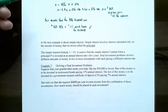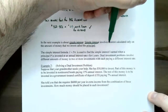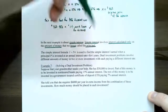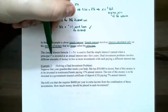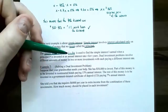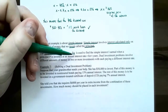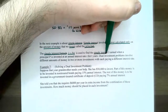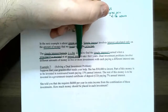The next example requires knowledge of simple interest. Simple interest is where interest is calculated only on the amount of money you invest — interest on the original amount. The original amount invested is called the principal. The simple interest formula is I equals P times R times T, where I is the interest, P is the principal, R is the interest rate as a decimal, and T is time always in years.